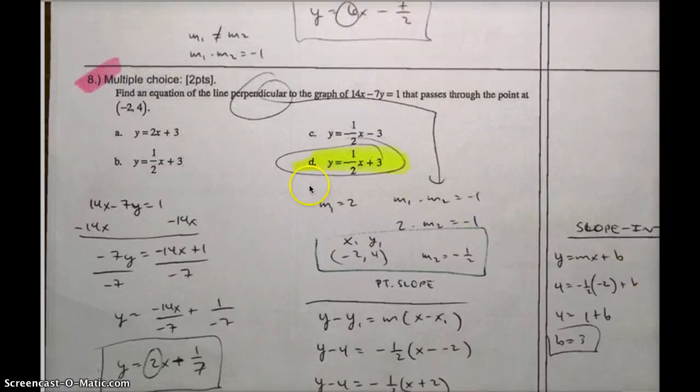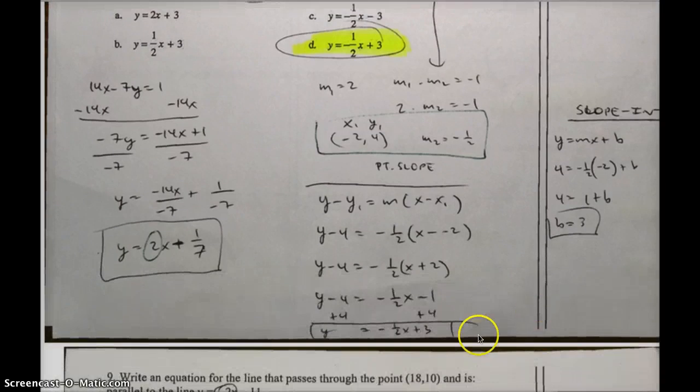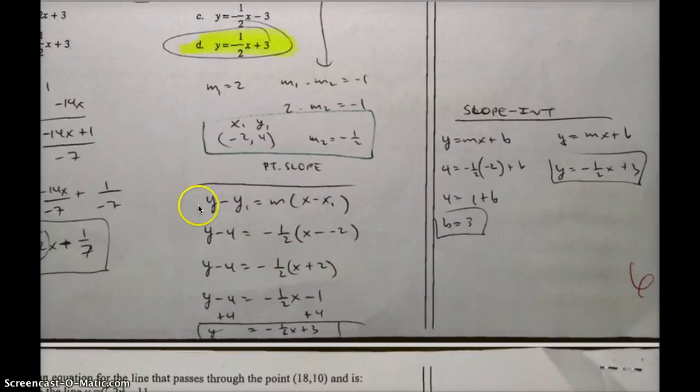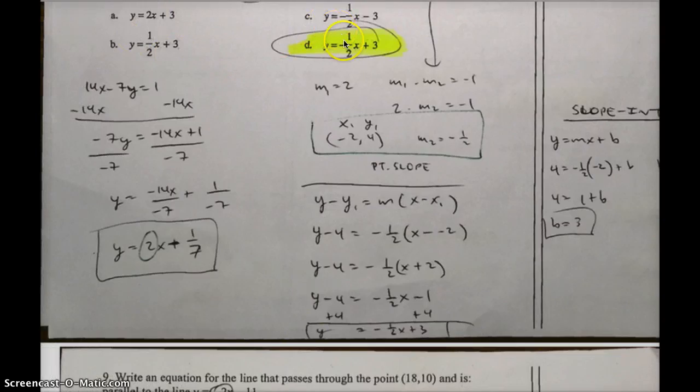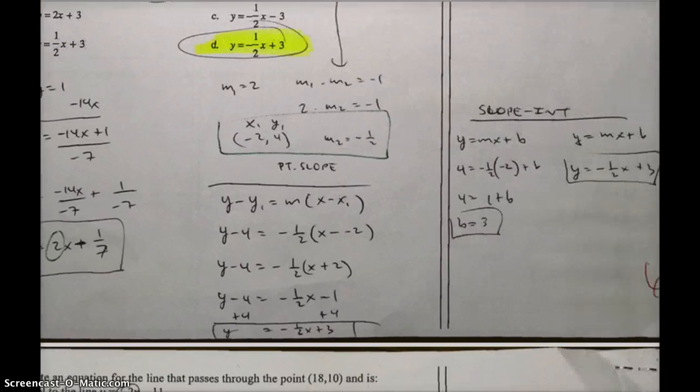Now I have to go through this point: negative 2, 4. The easiest one is point slope form, which you can write down in your formula sheet: Y minus Y1 equals M times X minus X1. I'm just going to substitute in the X1 here and the Y value, Y1 here, and your slope, negative 1 half. When you simplify, that's Y minus 4 equals negative 1 half X, that becomes a positive 2. If you have it in point slope, you can just add 4 here and get this as your answer, which is choice D.